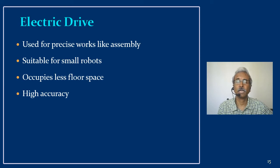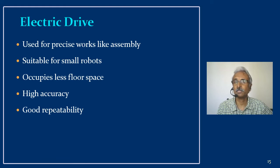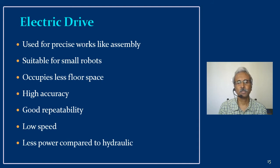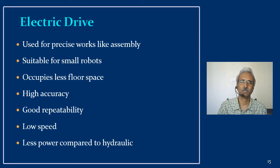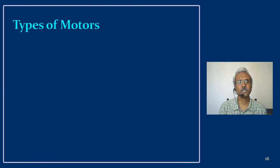Electric drives offer high accuracy, which is why they are used for precise work like assembly. Good repeatability is also a key characteristic — accuracy and repeatability are most important in critical operations like assembly, making electric drives more suitable than hydraulic or pneumatic. They can also operate at low speed. Regarding power, electric motors consume less power than hydraulic systems because there are no subsystems to power.